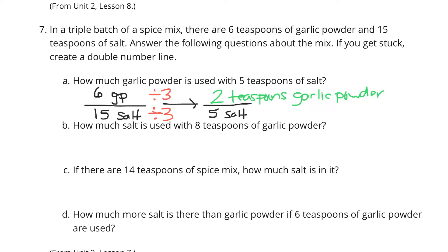How much salt is used with eight teaspoons of garlic powder. Well, if I have six garlic powder to 15 salt, can we simplify this at all? If I, once again, if we use what we did in question A and divide by three, this is equal to two teaspoons of garlic powder to five teaspoons of salt. And that can be much easier to work with then because I'm looking for eight teaspoons of garlic powder. Well, right now I'm at two teaspoons of garlic powder. And so if I were to multiply by four here, I would end up with the eight garlic powder that we're looking for over five times four is the 20 teaspoons of salt.